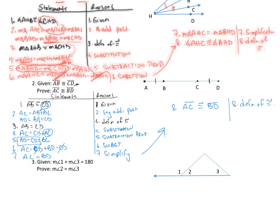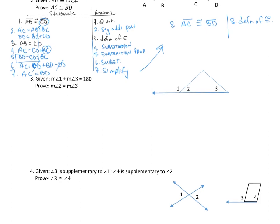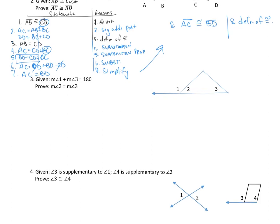Alright, let's move on to proof number three. We are given that the measure of angle one plus the measure of angle three equals 180. So if I add up angle one plus angle three, I'll get 180. And then I need to prove something about angle two and angle three — that those are equal as well. Let's start with our T-chart, putting statements and reasons on each side.